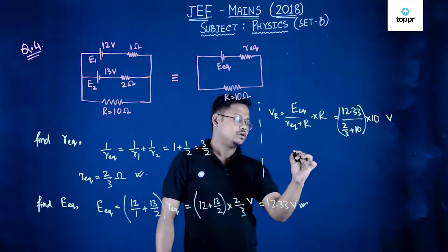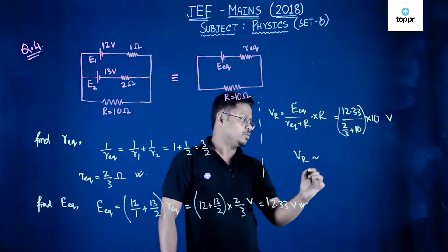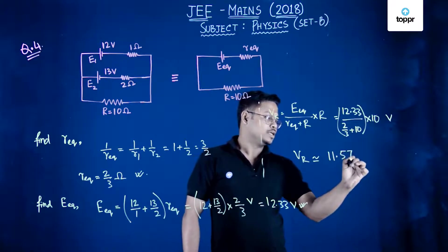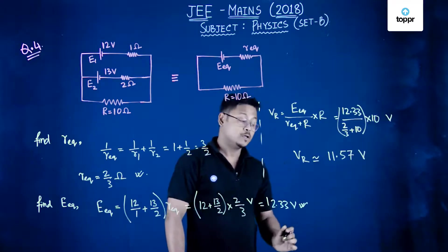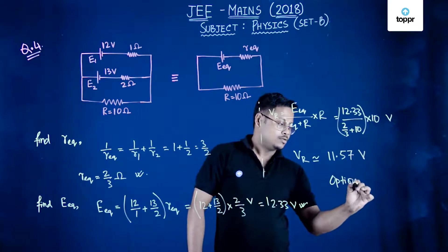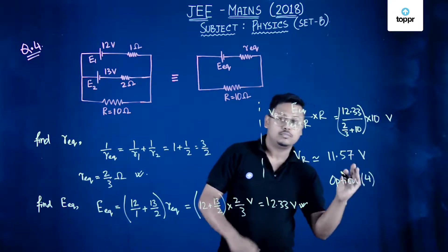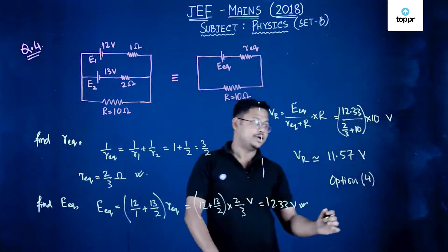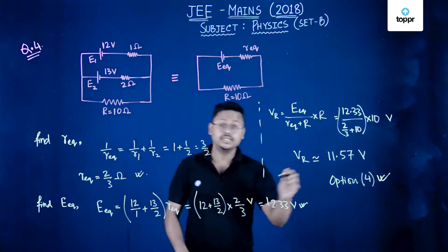This will turn out to be VR will be approximately equal to 11.57 volt. The correct option is option 4 because it lies from 11.5 to 11.6 volt. The correct option is option 4.